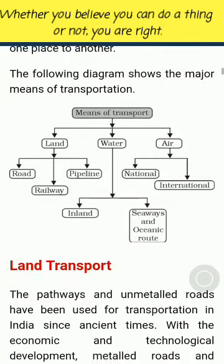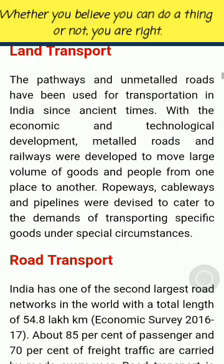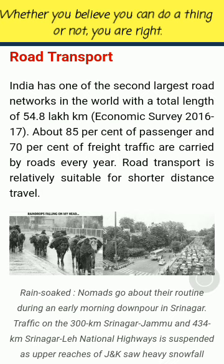The following diagram shows the major means of transportation. Land transport: the pathways and metalled roads have been used for transportation in India since ancient times. With economic and technological development, metalled roads and railways were developed to move large volumes of goods and people from one place to another. Ropeways, cableways and pipelines were devised to cater to the demands of transporting specific goods under special circumstances. Road transport: India has one of the second largest road networks in the world with a total length of 54.8 lakh km, as per Economic Survey 2016-17.